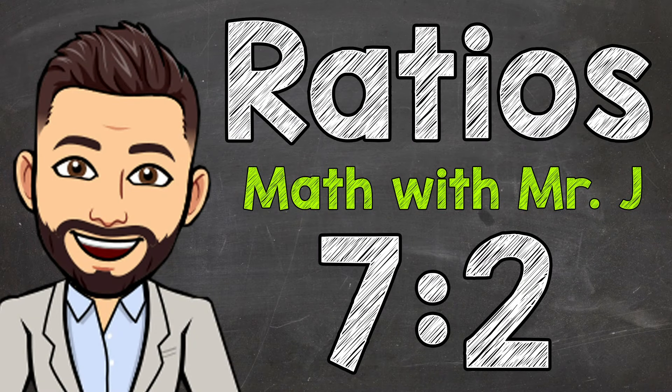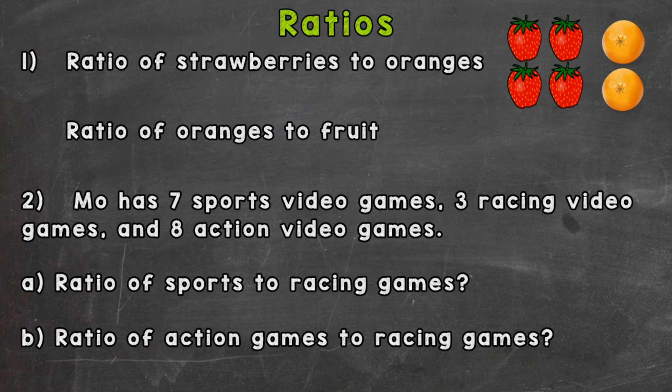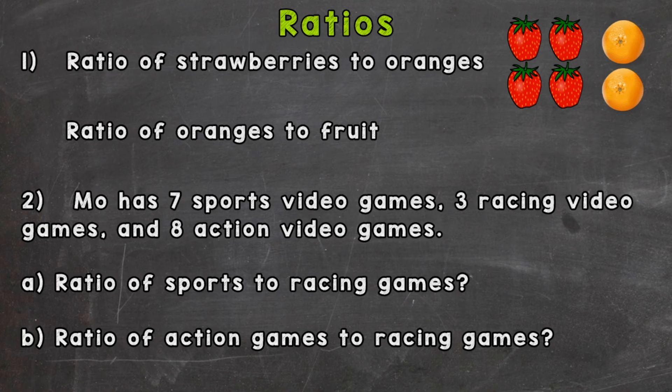Welcome to Math with Mr. J. In this video we're going to take a look at ratios and we have a couple of different situations that we're going to write ratios out for. Our first one, we have strawberries and oranges and we're going to use the picture up in the top right. Number two, we have a written-out situation that we are going to pull quantities from in order to write our ratios.